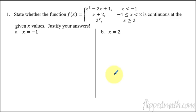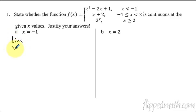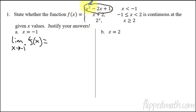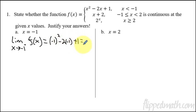On this first one we're going to use clear explanations of why this might or might not be continuous at X equals negative one. The piecewise function breaks at X equals negative one. We list one-sided limits. The limit as X approaches negative one from the left of F of X — we take the first piece and plug in negative one: negative one squared minus two times negative one plus one, and that equals four.